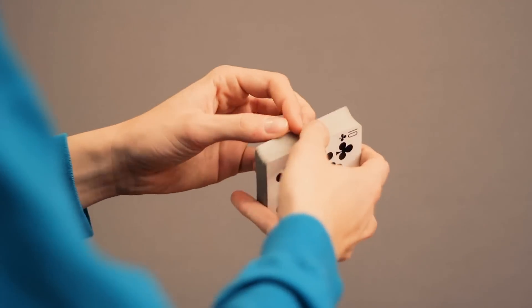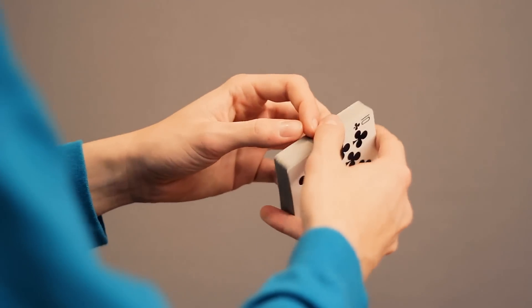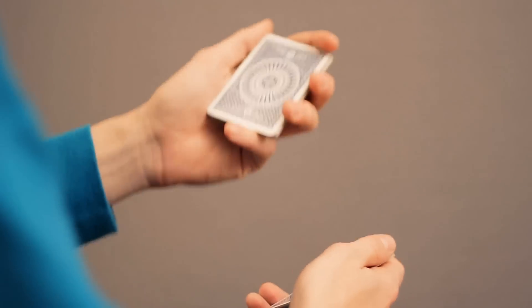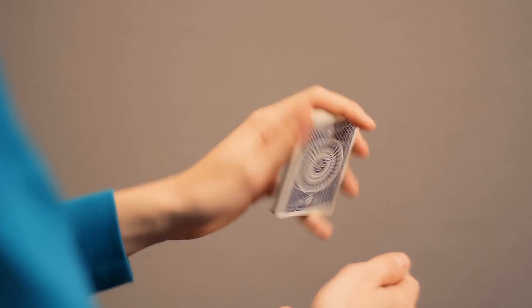Start off by having a small packet of cards, preferably less than half, in straddle grip in your non-dominant hand. Just like this.